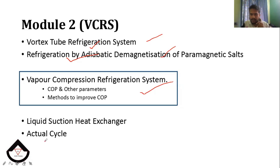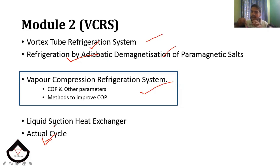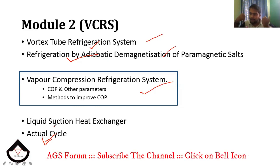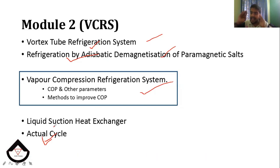What is the actual cycle? We have to do problems with VCRS. We consider the ideal process first. If we consider the actual cycle, we take into account real-life conditions. We analyze the graph and examine the actual cycle.